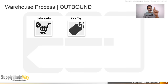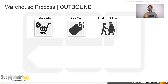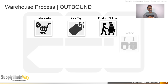The picker takes the pick tag, goes to the specified location, picks the product, and brings it to the outbound staging area. Once products for that order are picked, a sorting step may occur. There are two main ways to pick an order: order-based picking, where you pick all items for one order at a time, and batch picking, where orders are grouped together.